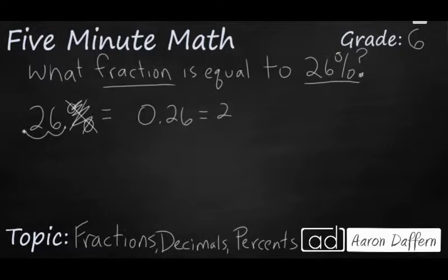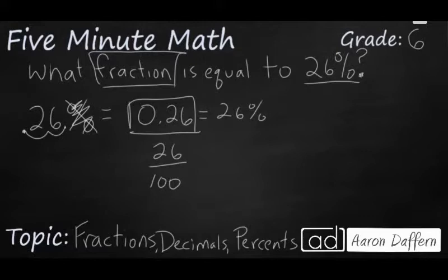Now that's step one. Step two, now that we have our decimal, we can go ahead and write this as a fraction because this is 0.26 or 26 hundredths. So let's write this as a fraction, 26 hundredths. So now we have a fraction. 26% is the same as 26 hundredths or 26 over 100.